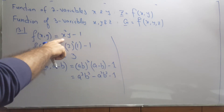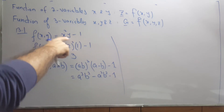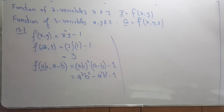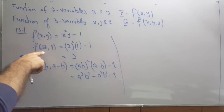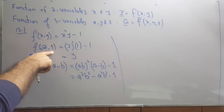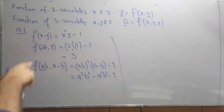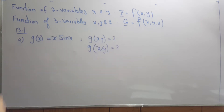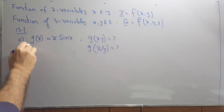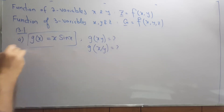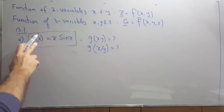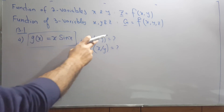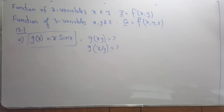Substituting those values will give you a unique value for every point (x, y). In question number 4, you are given a function in one variable and they are changing that one-variable function into a two-variable function of x and y.